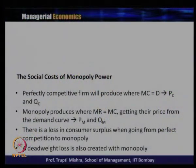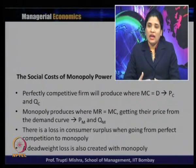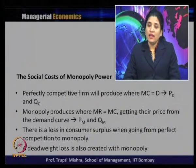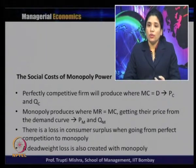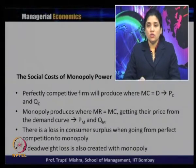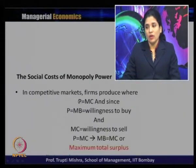Whether monopoly power makes the consumer better off or worse off — for both consumer and producer — we can compare the producer and consumer surplus in competitive versus monopolistic markets. In a perfectly competitive firm, the firm produces where marginal cost equals price, and the price comes from demand and supply forces. Whereas a monopoly produces where marginal revenue equals marginal cost, and gets price from the demand curve. The loss in consumer surplus when moving from perfect competition to monopoly leads to a deadweight loss.